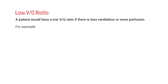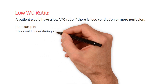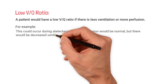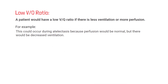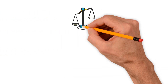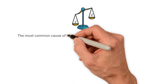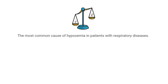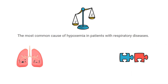Alternatively, a patient would have a low VQ ratio if there is less ventilation or more perfusion. For example, this could occur during atelectasis, because perfusion would be normal but there would be decreased ventilation. An area with perfusion but no ventilation is referred to as a shunt. A VQ imbalance is typically the most common cause of hypoxemia in patients with respiratory diseases, because any respiratory condition that causes decreased ventilation results in a VQ mismatch and eventually low oxygen levels in the blood.